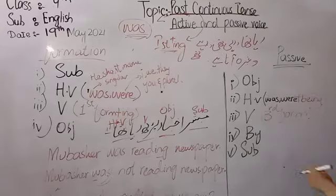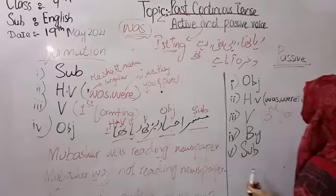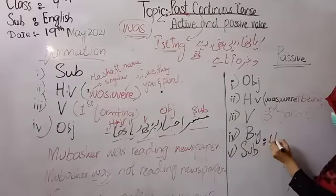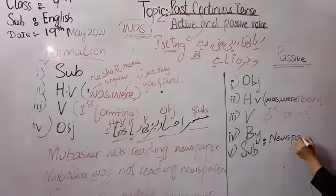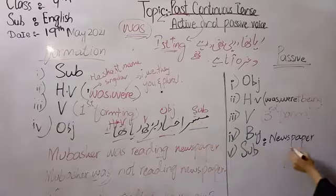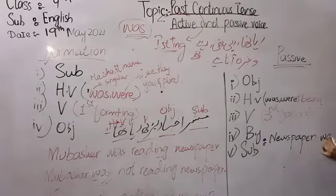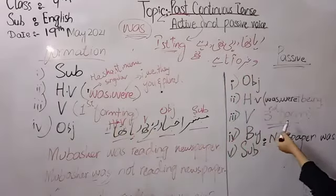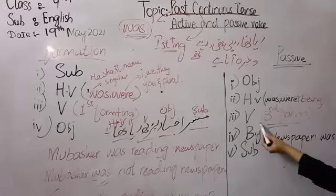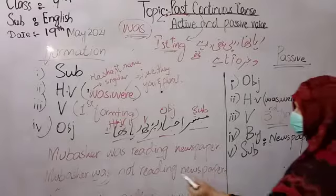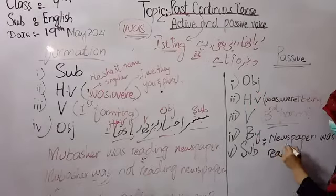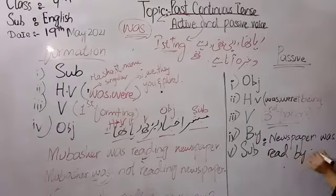Now let's form the passive voice. Active: Mubashir was reading newspaper. The object 'newspaper' becomes the subject. Newspaper is singular, so we use 'was'. We add 'being' after the helping verb, then the third form of the verb. The first form is 'read' and the third form is also 'read'. So: Newspaper was being read by Mubashir.